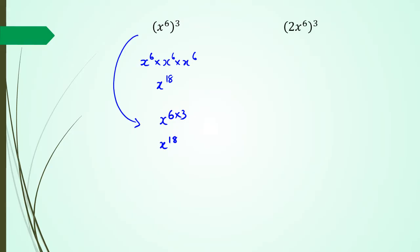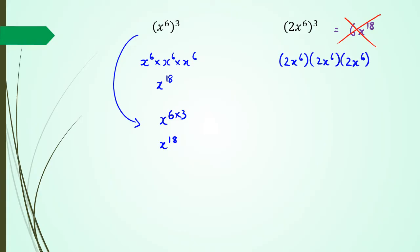Another example — and the classic mistake people make here is writing the answer as 6x to the power of 18. That's incorrect. What we actually have is 2 to the power of 2, times x to the power of 6, all to the power of 3. Writing it out three times: 2 times 2 times 2 is 8, and x to the power of 6 three times gives x to the power of 18.